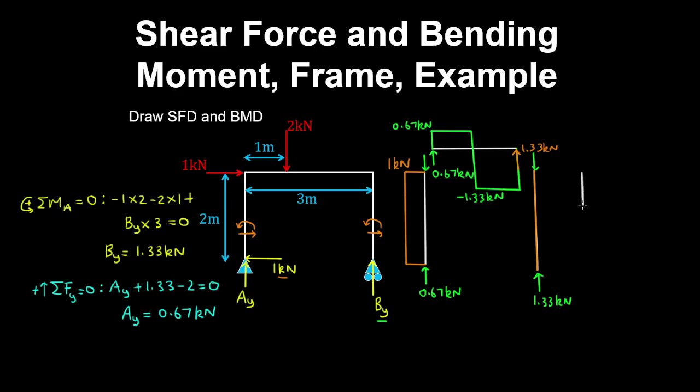And now we'll draw in the bending moment diagram in a similar way by breaking up the members. So if you visualize the deformation of this frame, this column here is going to behave like a cantilever with a point load acting at the end of it.